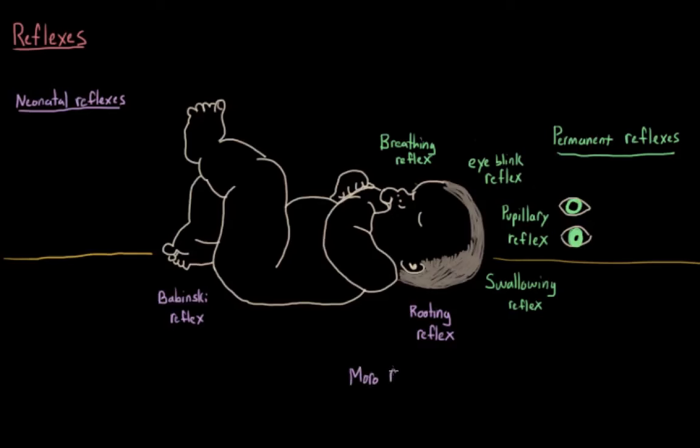We also have the Moro reflex, which is kind of a startle reaction. Things like a loud noise or a sudden change in the orientation of the baby's head will cause the baby to throw its arms outward, arch its back, and then bring its arms back down towards each other. And the Moro reflex disappears at about four to six months of age. And obviously we still have a startle reflex as adults, but it's different from the one that we see here.